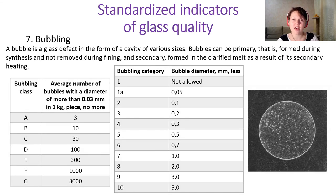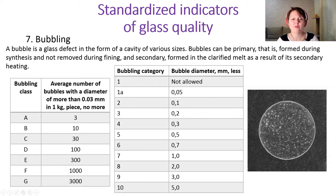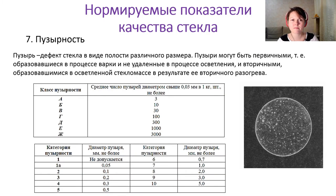We also have an indicator for the presence or absence of bubbles inside the glass volume, their largest diameter, the bubbling category, and the average number of bubbles inside one kilogram of glass. You can also see a photo of glass with many bubbles here.